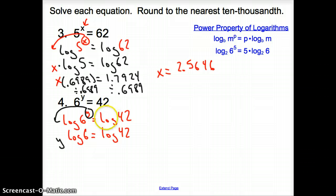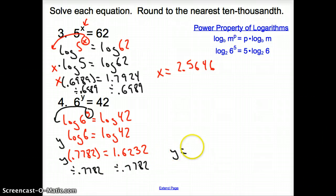You can evaluate these two right away. Log of 6 is 0.7782 and log of 42 is 1.6232. Now we divide out that 0.7782 because it is attached through multiplication. So now y equals 2.0859 for our final answer.